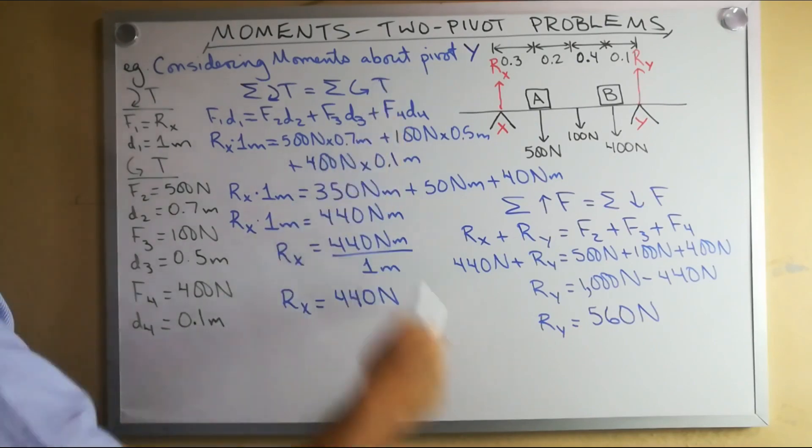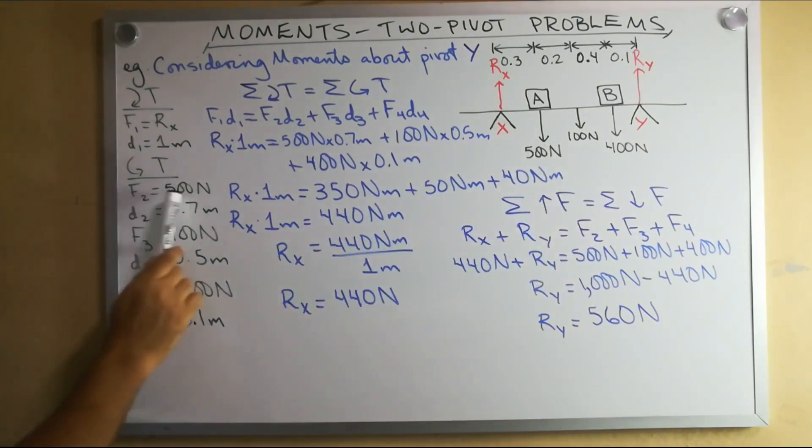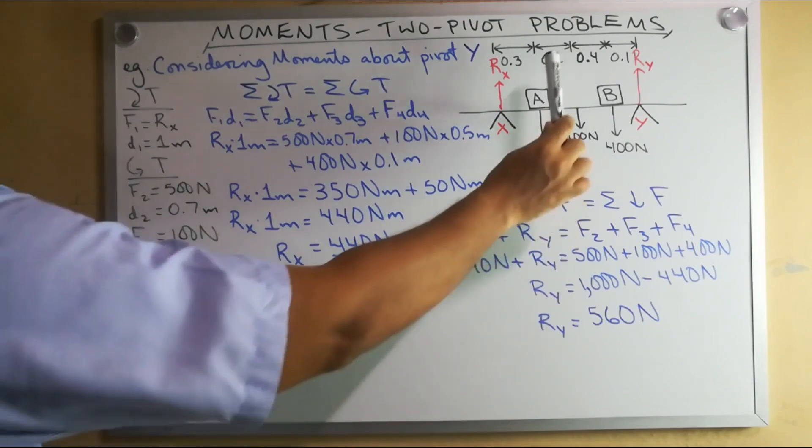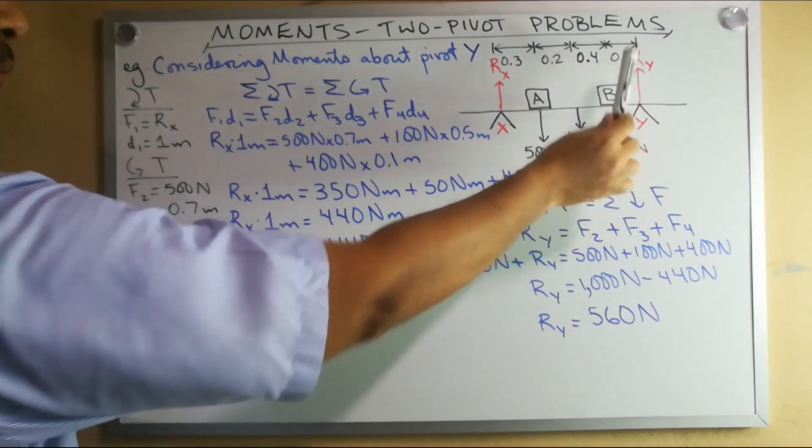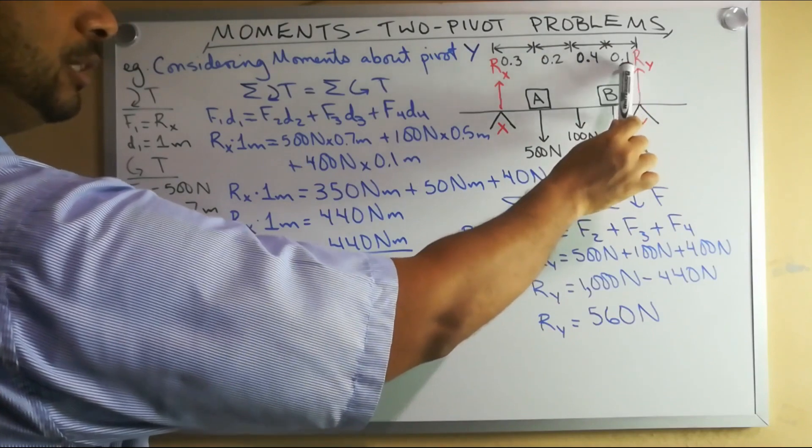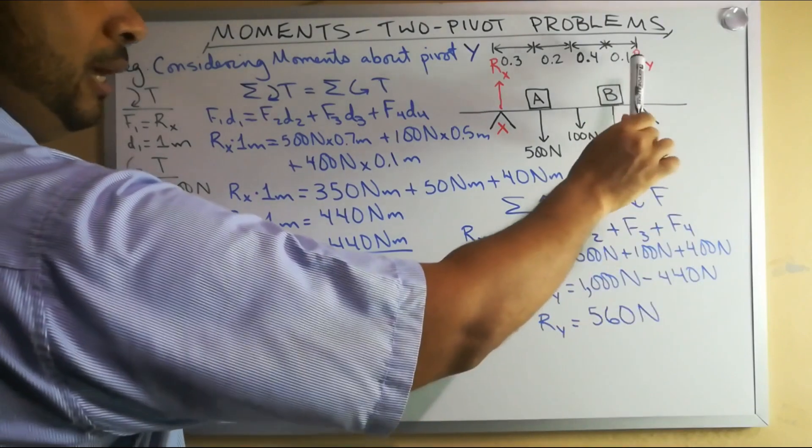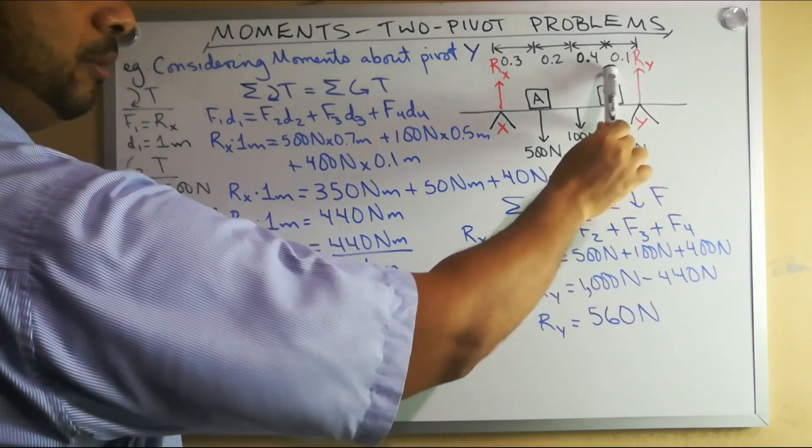We now have only anti-clockwise moments. Let's continue from left to right. Our next force, the second force, is 500 newtons. How far is that point A from point Y? It is 0.2 plus 0.4 plus 0.1 which is 0.7 meters. The third force is 100 newtons. It is 0.5 meters which is the sum of 0.4 and 0.1. And our fourth and final force to consider is 400 newtons. How far is that point B from point Y? It is simply 0.1 meters. We do not need to add or subtract anything here.